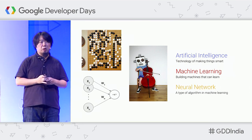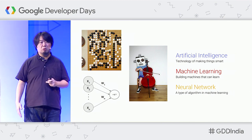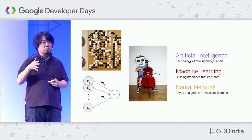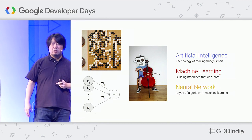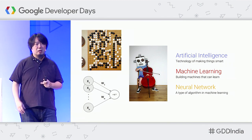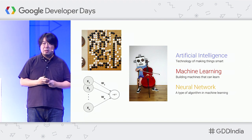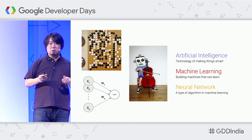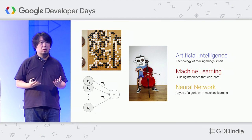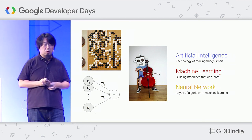If you have more and more deeper layers of neural networks, that is called deep neural network or deep learning. Around 2012, we saw a breakthrough happening in the area of neural networks, which is why Google has been spending so much resources and investment in this area.